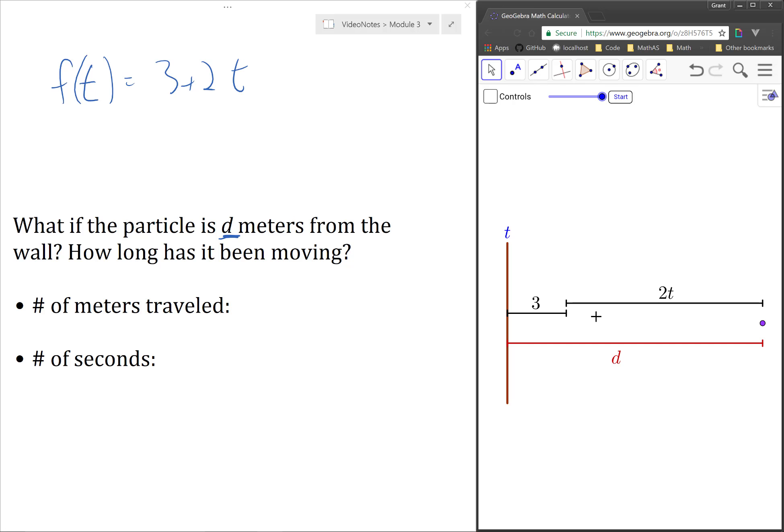So you should be able to imagine this. We've got d meters here, we take away 3 meters, and that tells us how far it's moved since it started moving. So the number of meters traveled is actually equal to d minus 3.